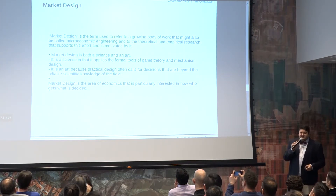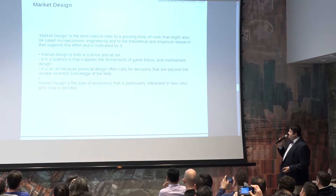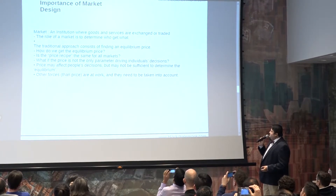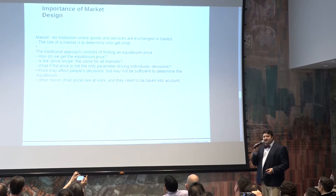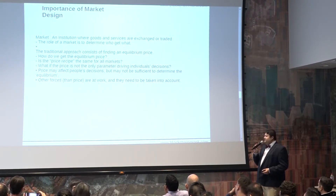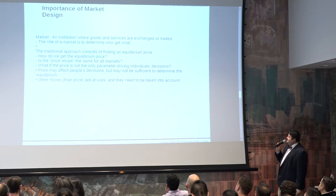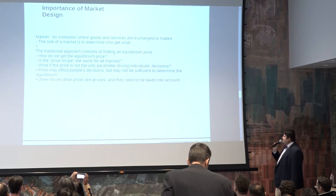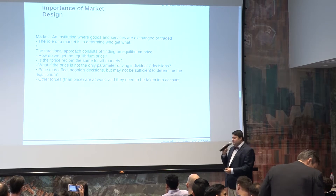The third area is market design, which is designing efficient markets. It's both a science and an art. One of the main things with market design is getting the equilibrium price — what is the right equilibrium at which the price can stabilize? Is the price recipe the same for all markets or different for different markets, and how will the price affect people's decisions and change their perception about the token? Will they go to a different protocol?